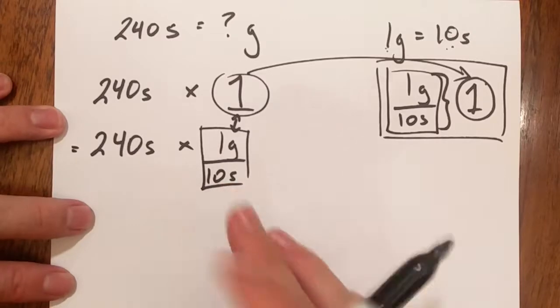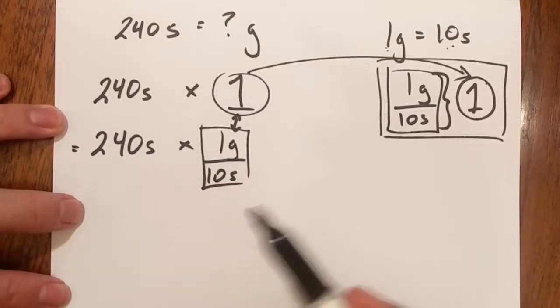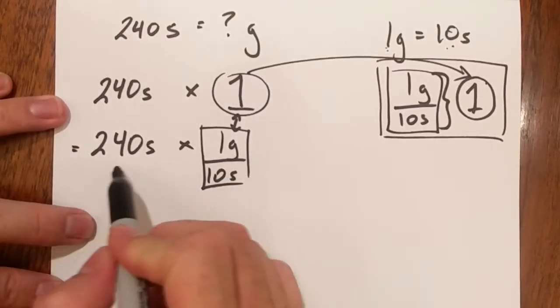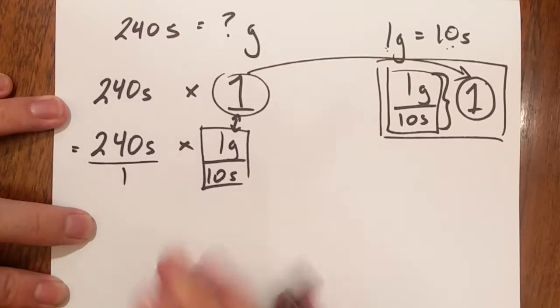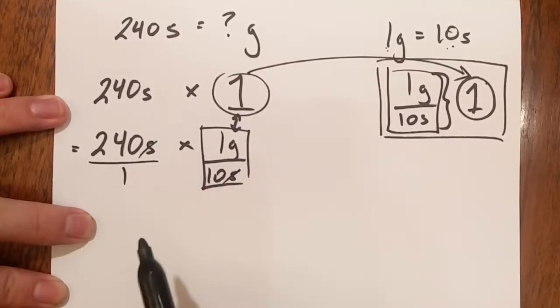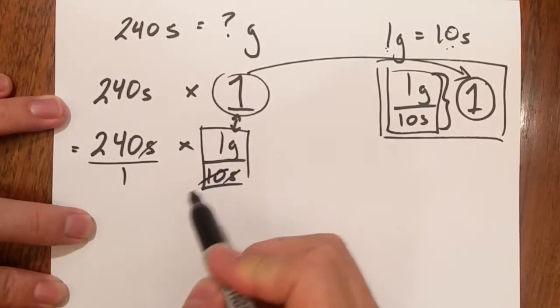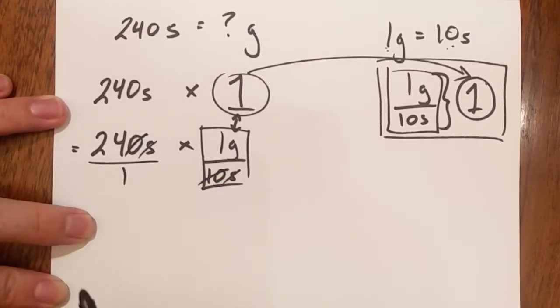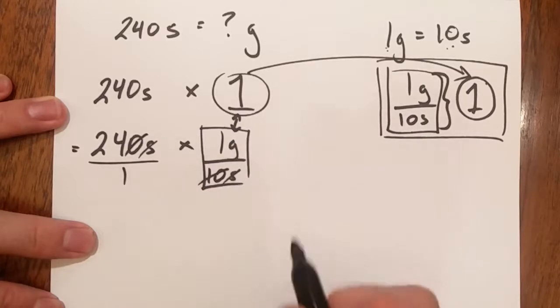Now that I have this set up what I can do is I can start my cross simplification. Now I know that this is technically over one. Silvers they can cross simplify. I have my ten can cross simplify with that ten over there and that's about it.